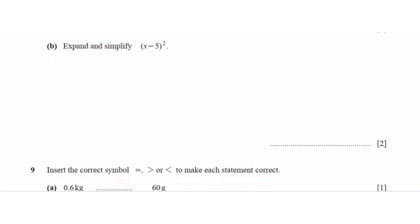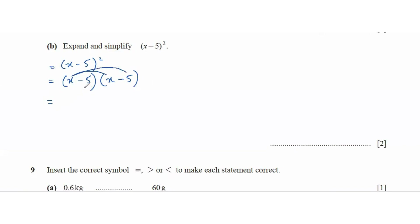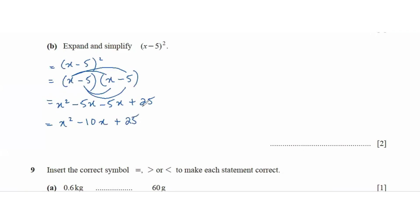Expand and simplify (x minus 5) squared. That's (x minus 5) times (x minus 5), giving us x times x, x times negative 5, negative 5 times x, and negative 5 times negative 5, which is x squared minus 5x minus 5x plus 25. That equals x squared minus 10x plus 25.